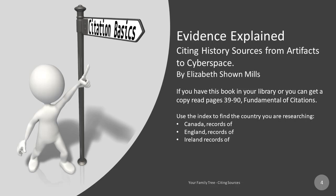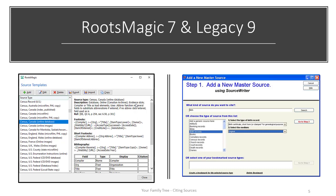Let's talk about using genealogy software for documenting our family history and genealogical records. I'm going to discuss RootsMagic 7 and Legacy 9. RootsMagic 7 has a source manager and a citation manager. Legacy 9 has a source writer that's not available in the standard version — you must purchase the deluxe version to get the source writer. Software programs will help you enter information correctly and precisely, formatted to match genealogy industry standards for source citations when printing footnotes, endnotes, and bibliographies.